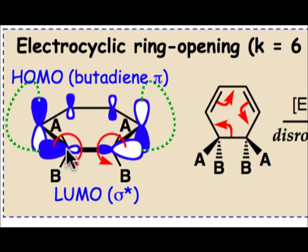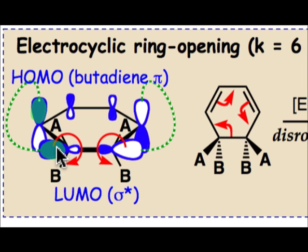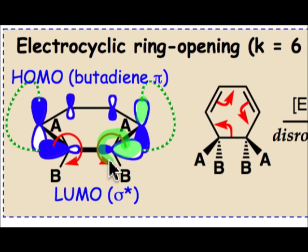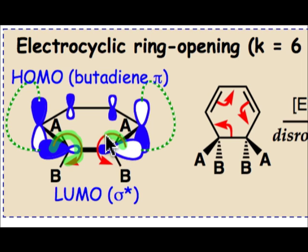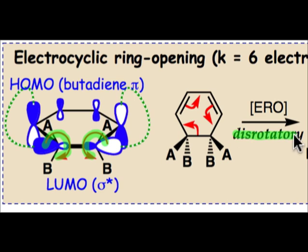Starting with the leftmost atom, we're going to need to twist this in the clockwise direction. Twisting that clockwise will match the shaded region of the HOMO on this lobe with the σ* shaded region to get a π-type interaction between those two atoms. On the other end, we need to rotate in the opposite direction. In order to match the unshaded lobe on σ* with the unshaded lobe of the HOMO of butadiene, we need to twist this in the counterclockwise direction. So for this k=6π electron case, on one terminal position we're rotating clockwise and on the other counterclockwise — that's the disrotatory pathway.